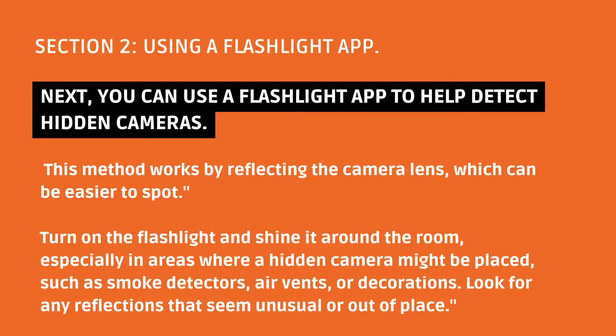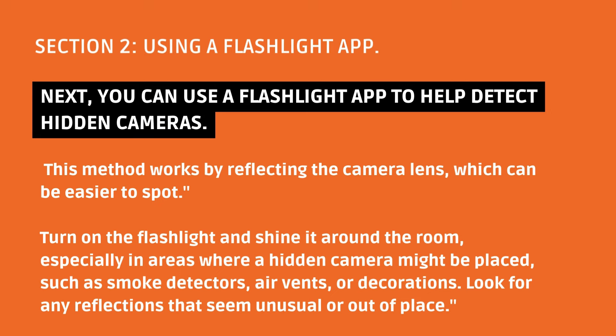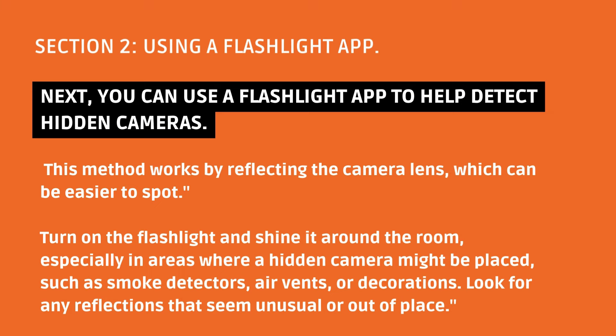Section 2: Using a Flashlight App. Next, you can use a flashlight app to help detect hidden cameras. This method works by reflecting the camera lens, which can be easier to spot. Turn on the flashlight and shine it around the room, especially in areas where a hidden camera might be placed, such as smoke detectors, air vents, or decorations. Look for any reflections that seem unusual or out of place.